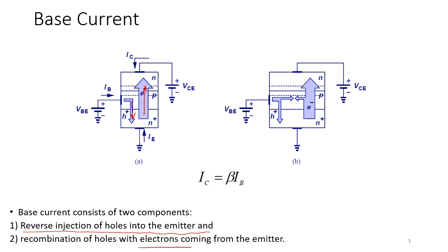The second component contributing to the base current is the recombination of holes with electrons coming from the emitter. The base is actually pretty thin, so some of these electrons traveling from emitter to base get recombined before reaching the depletion region between base and collector. This happens very occasionally — out of every hundred electrons, only about one gets recombined, because the base is very lightly doped.